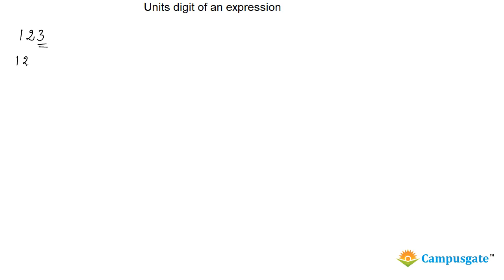The unit's digit of a number — if you consider 123, here 3 is called the unit's digit of that number. If you consider an expression like 12 multiplied by 54 and you want to find the unit's digit, there is no need to multiply the whole number. You just simply multiply the unit's digit of these two numbers, so you will get 8.